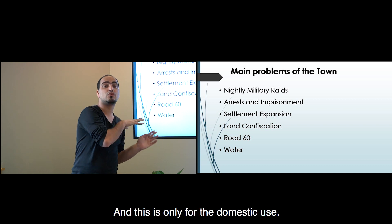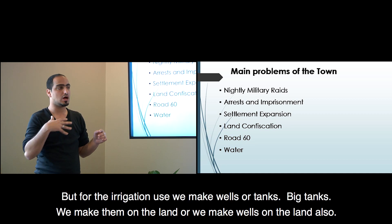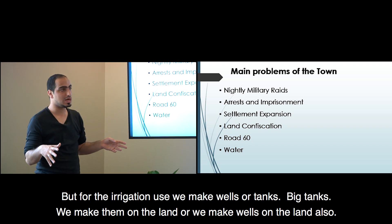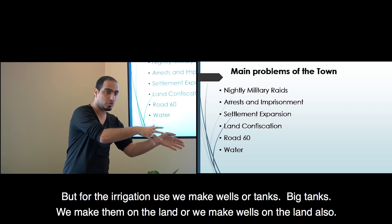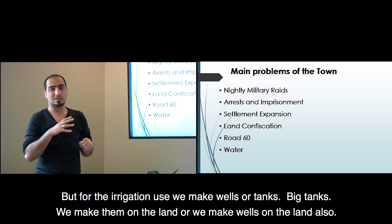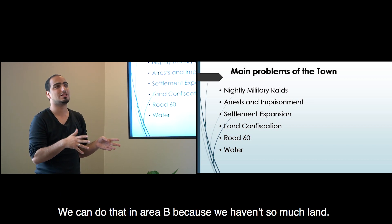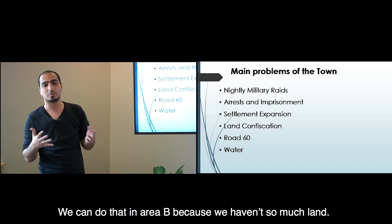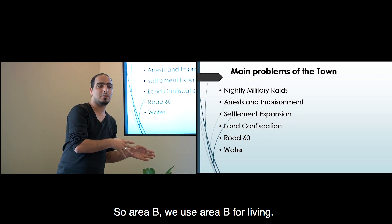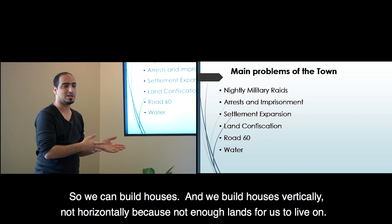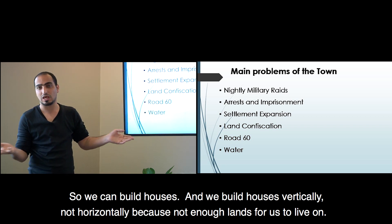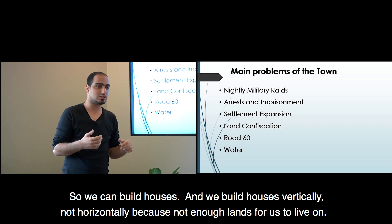This is only for domestic use. For irrigation, we make wells or big tanks on the land. But we can only do that in Area B because we don't have much land there. We use Area B for living, and we build houses vertically, not horizontally, because that's all the land we have.